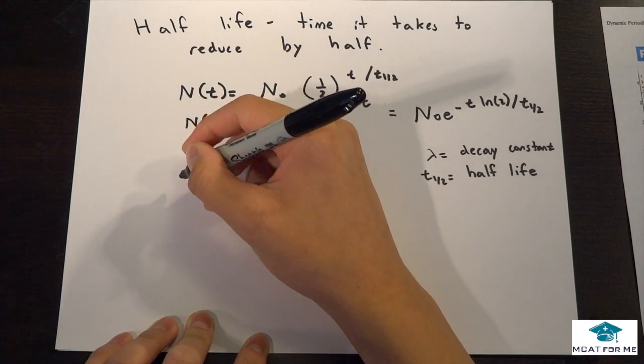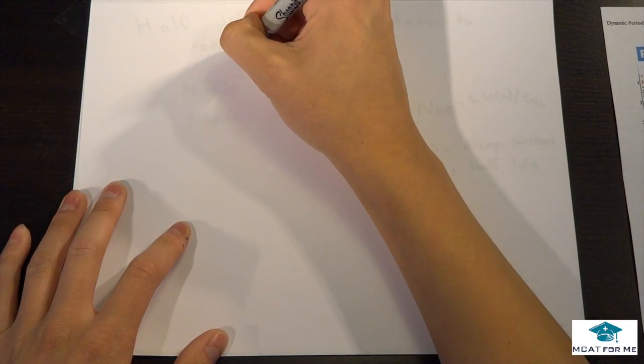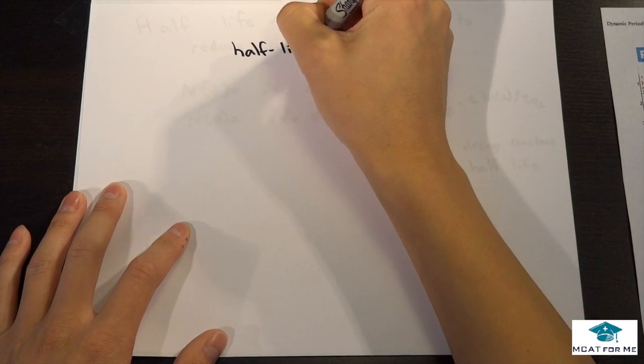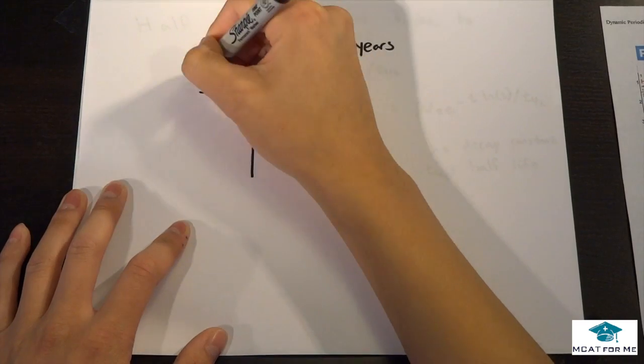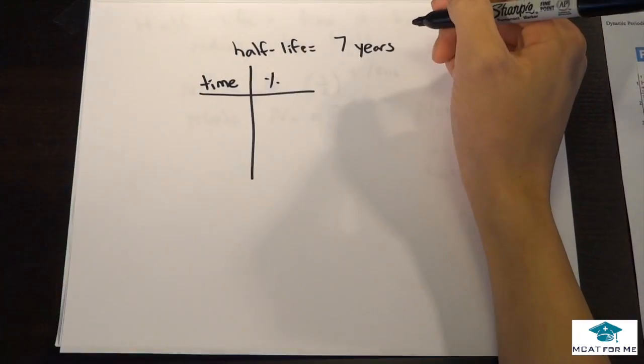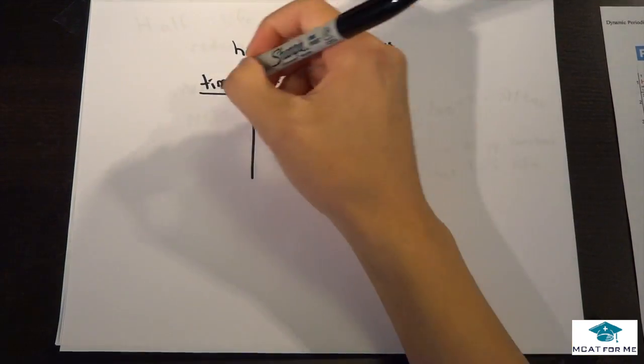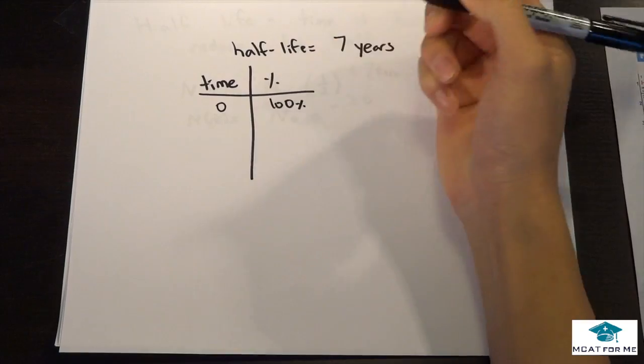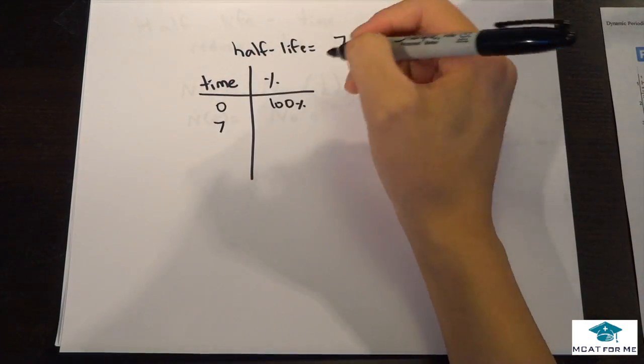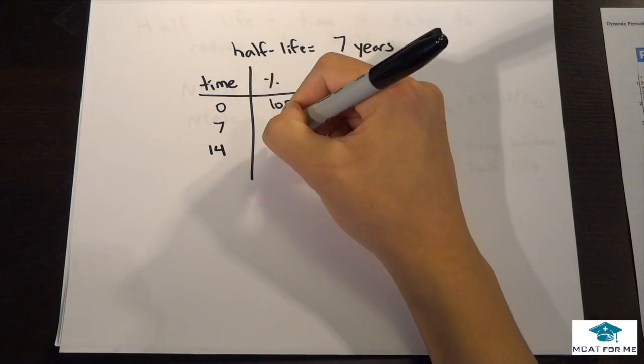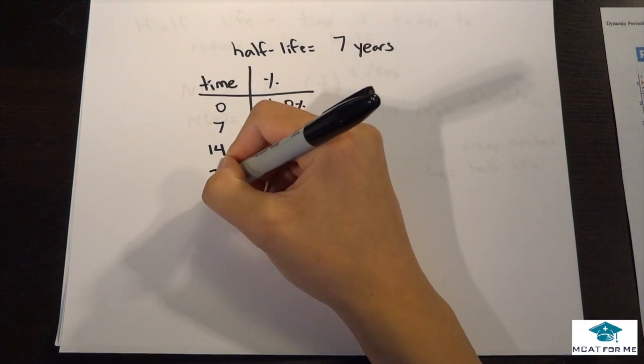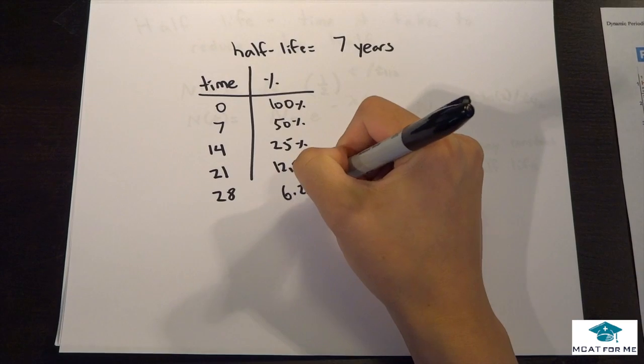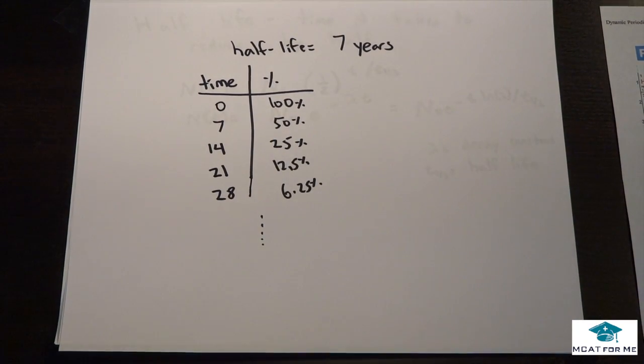So what we're going to do is we're going to make this very, very simple table. And so what we'll start off with, say the half-life equals 7 years. So we'll have this as time, and this would be percentage. So always make the table like this. We'll say at 0 years, we have 100%, right? Makes sense, nothing decayed. At 7 years, we'll have 50%, 14 we'll have 25%, 21 we'll have 12.5%, 28 we'll have 6.25%, and on and on and on. So that should be fairly easy. So all we have to do is this.